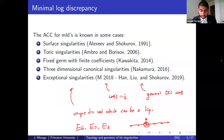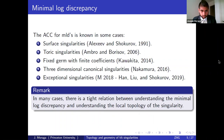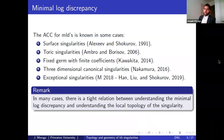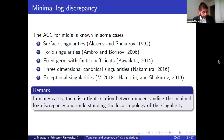These two results heavily rely on BAB. In many cases there is a really close relation between understanding the minimal log discrepancies and understanding the local topology of the singularity. I will proceed to explain why this is the case.